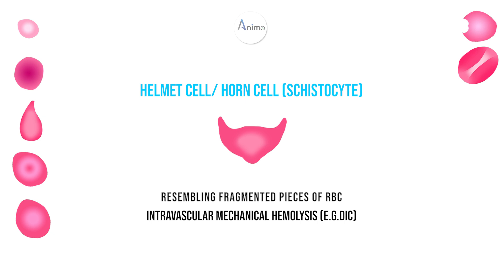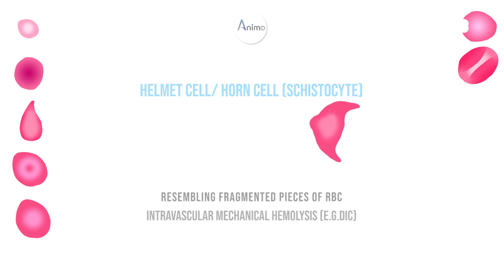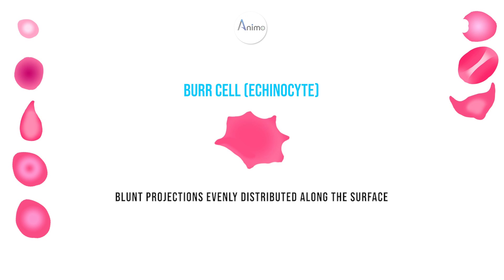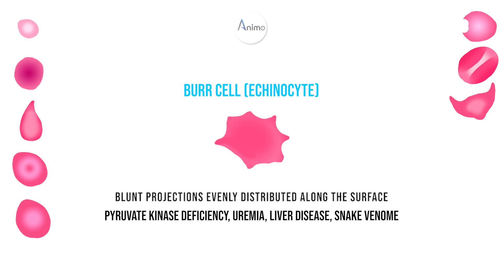The next RBC is burr cell, also called echinocyte. In this RBC, there are blunt projections that are evenly distributed on the surface of the RBC. It is found in pyruvate kinase deficiency, uremia, liver disease, and snake venom.